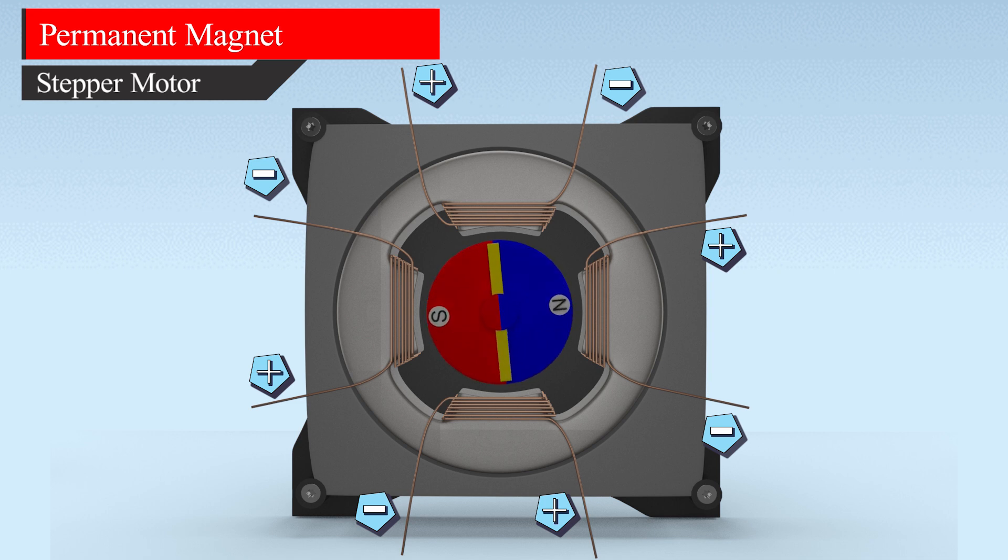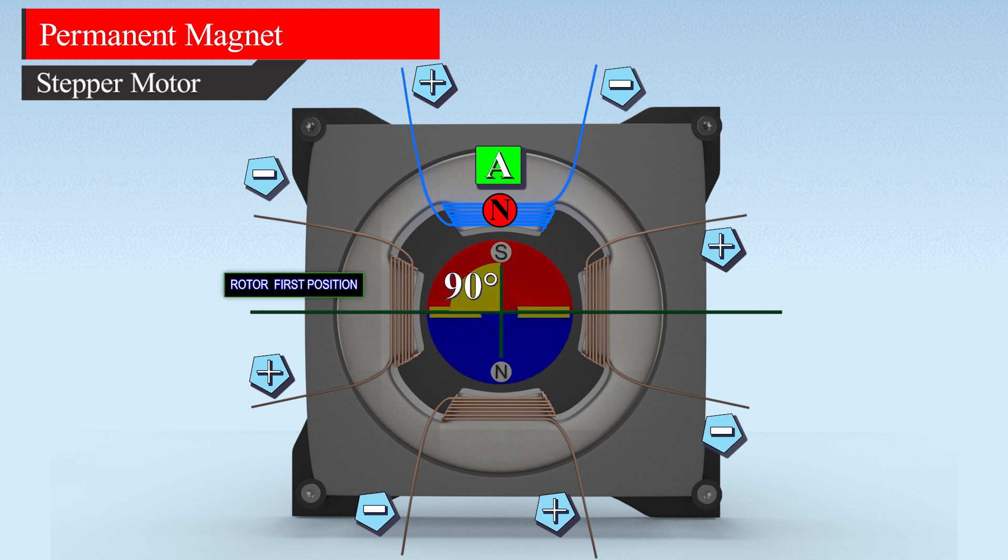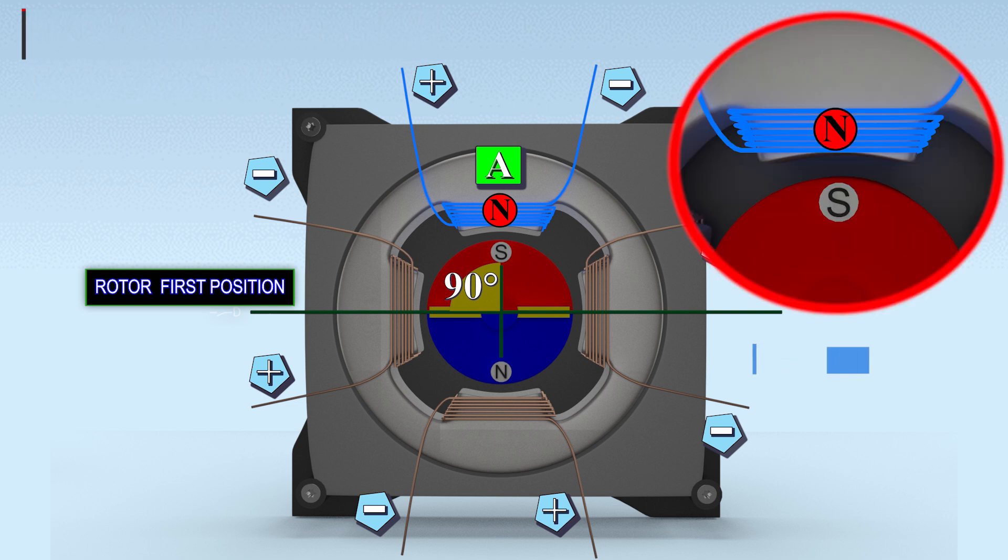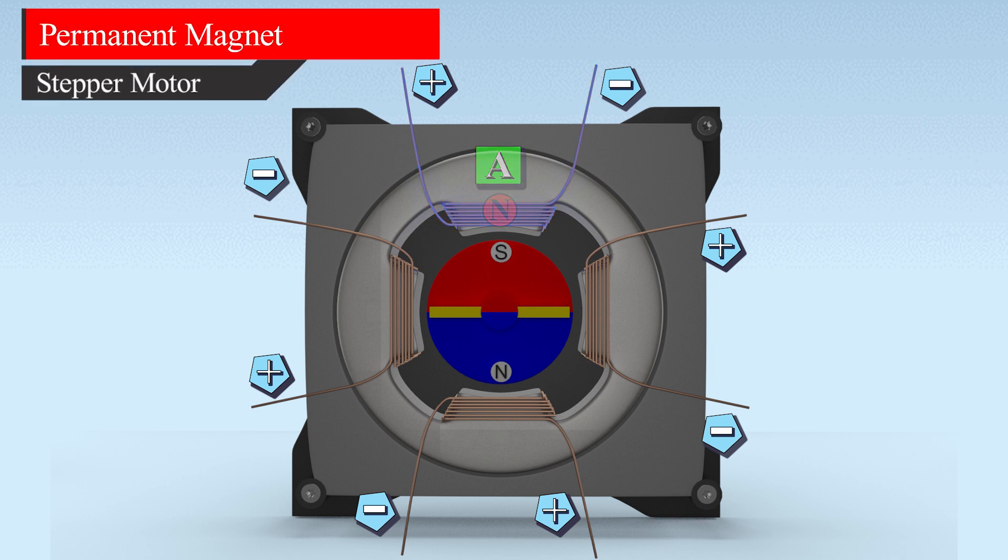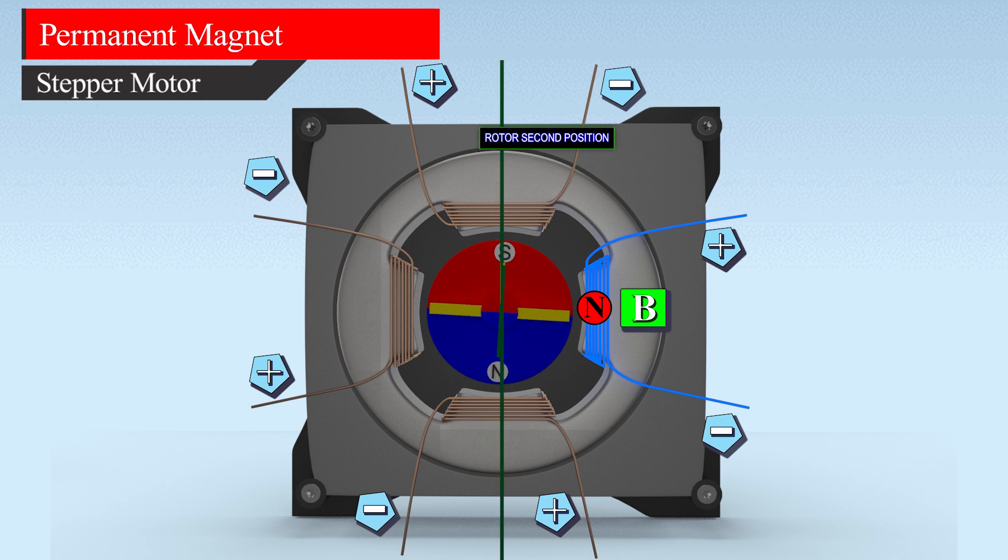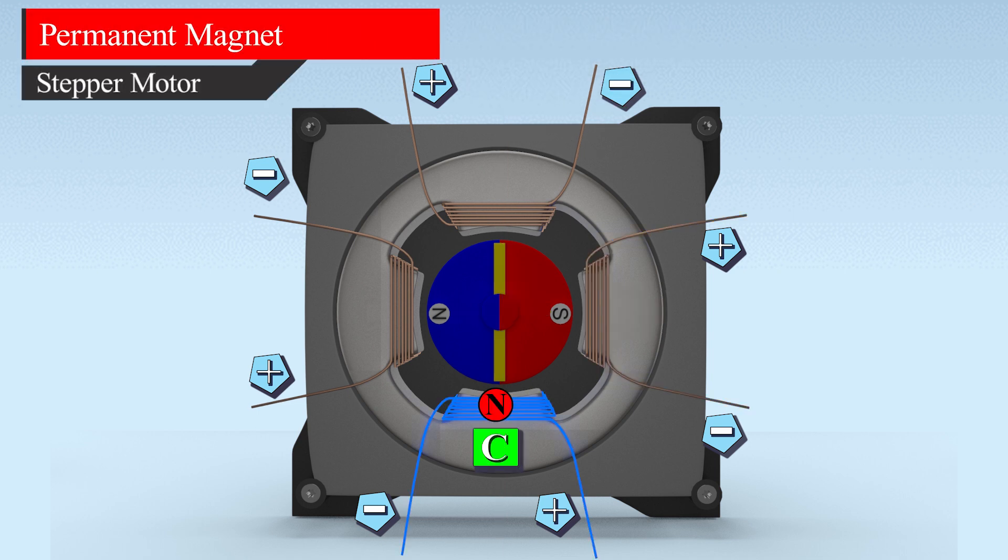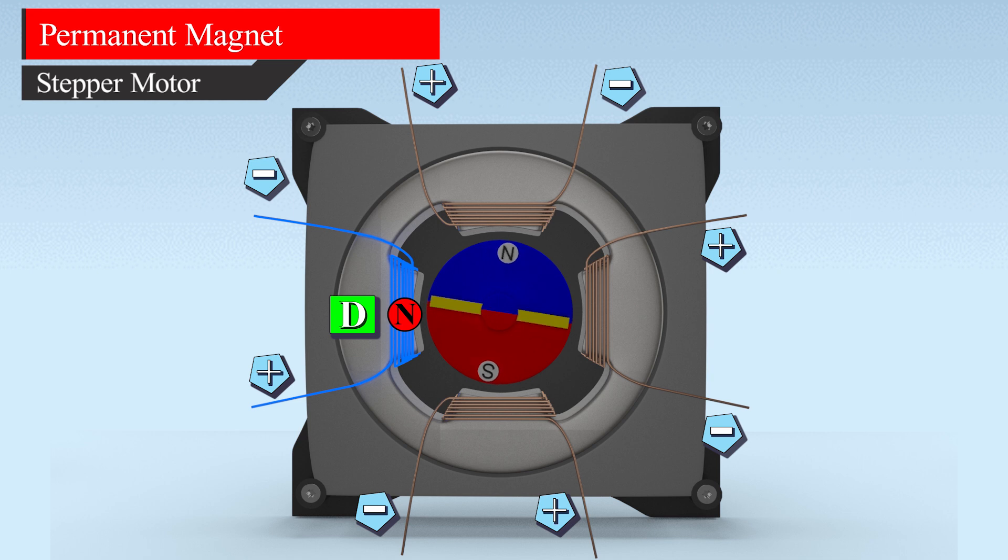When the supply is connected to winding of phase A, magnetic pole N is established on phase A. The rotor already consists of poles N and S. Due to the torque developed, the rotor starts rotating to adjust its axis of poles as unlike poles attract and like poles repel. The S pole of the rotor is aligned with phase A of the stator. Now the supply is disconnected from phase A and connected to phase B. The rotor further rotates and is aligned with phase B. Similarly, windings of phases C and D are connected to the supply sequentially, and the rotor further changes its position according to their respective pole axis.